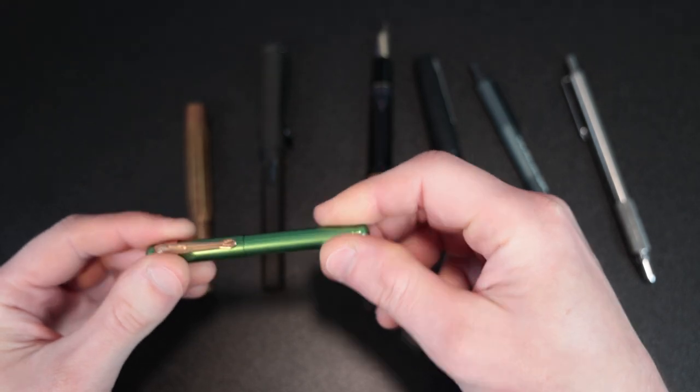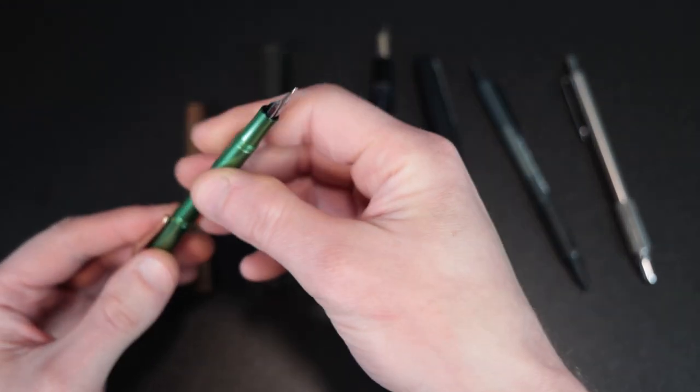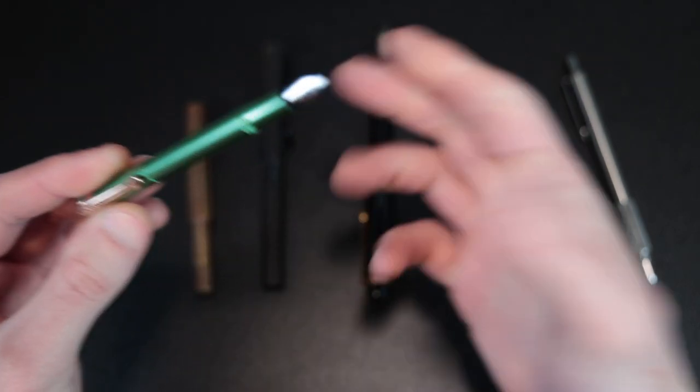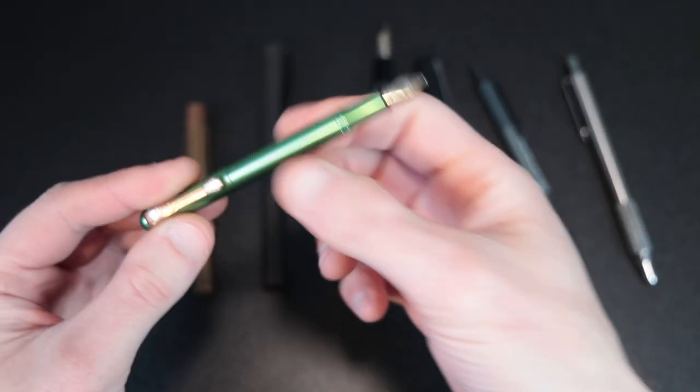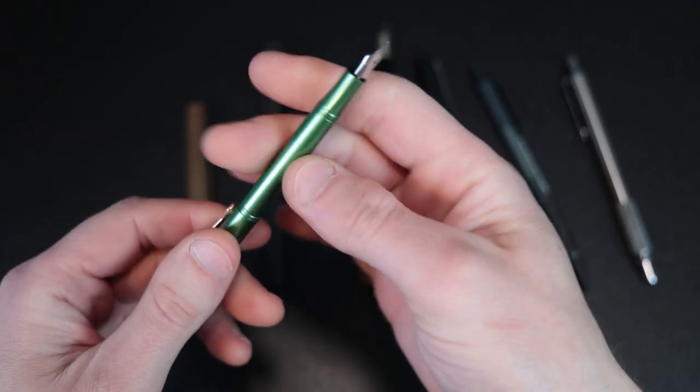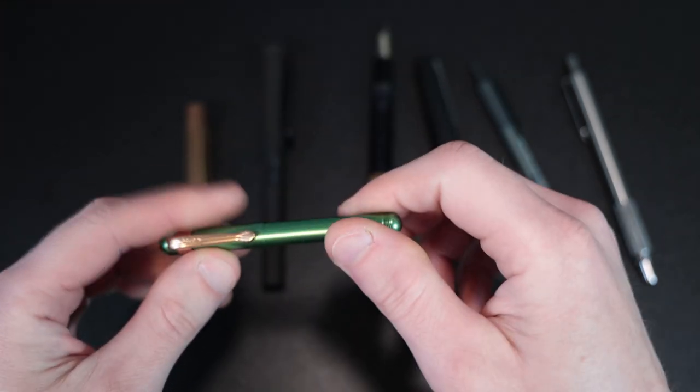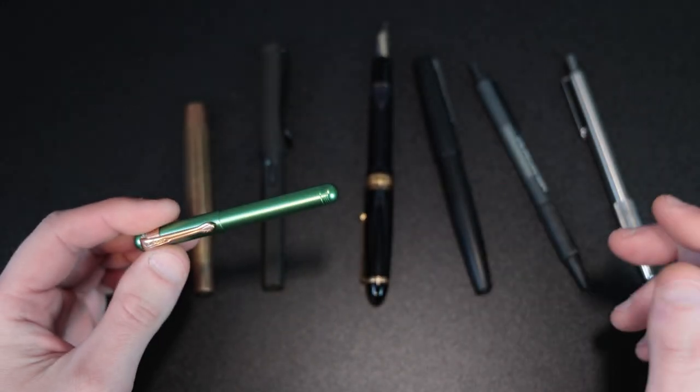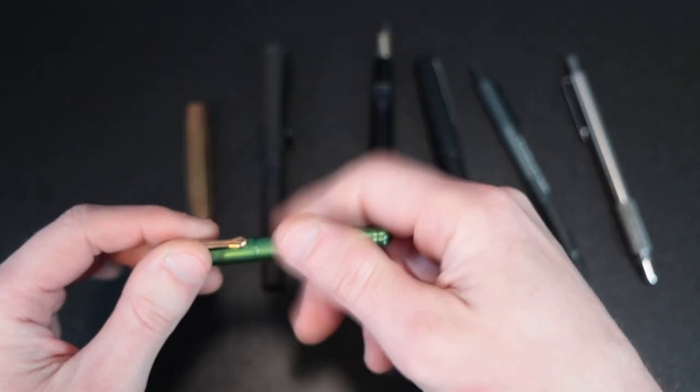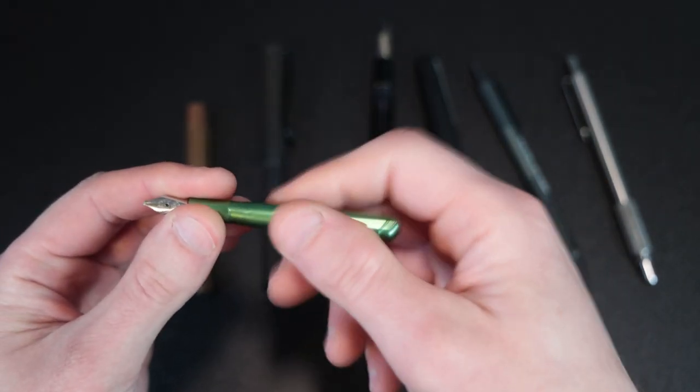But I'll show you that when I do a little bit of writing. The body of this pen is aluminum. You have to unscrew it to take the cap off, and then you do have to screw it in to post. Some people might find that to be an issue. It's not as quick as a pen that you can just pop off and pop on the back, but it's not too bad. It's only a few turns. The ink capacity is about a little less than one millimeter in the standard international cartridge.